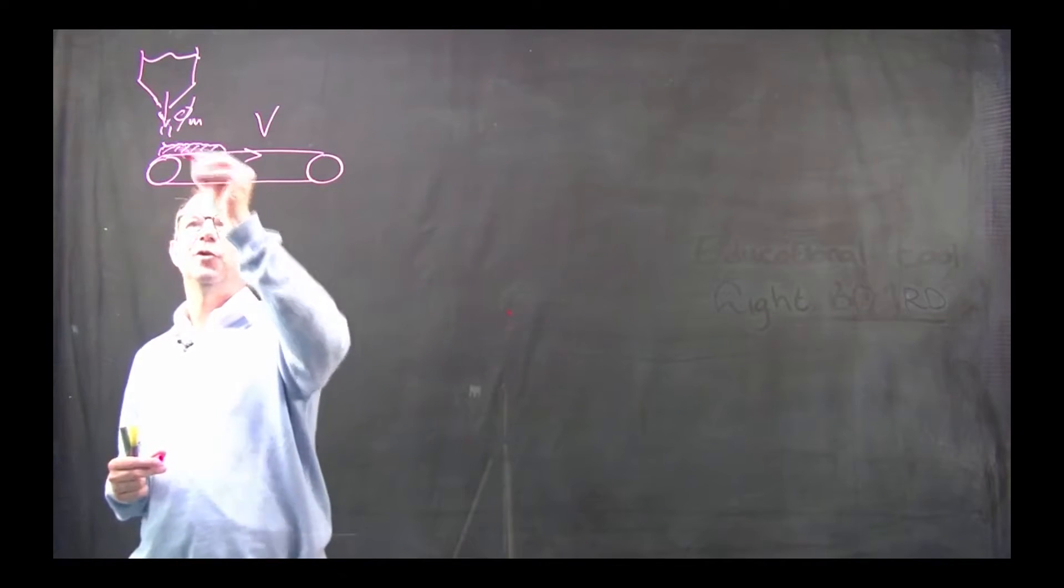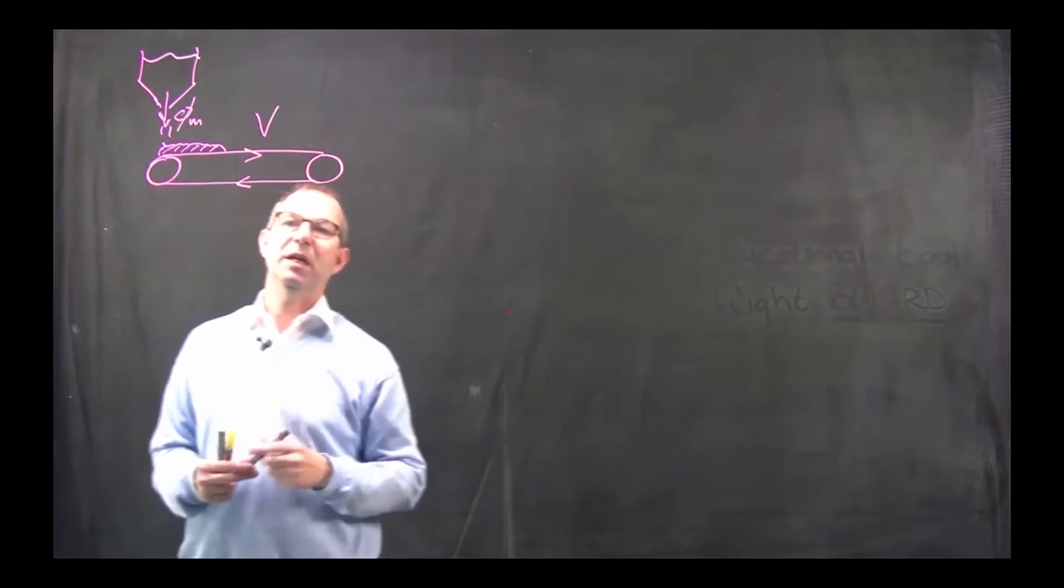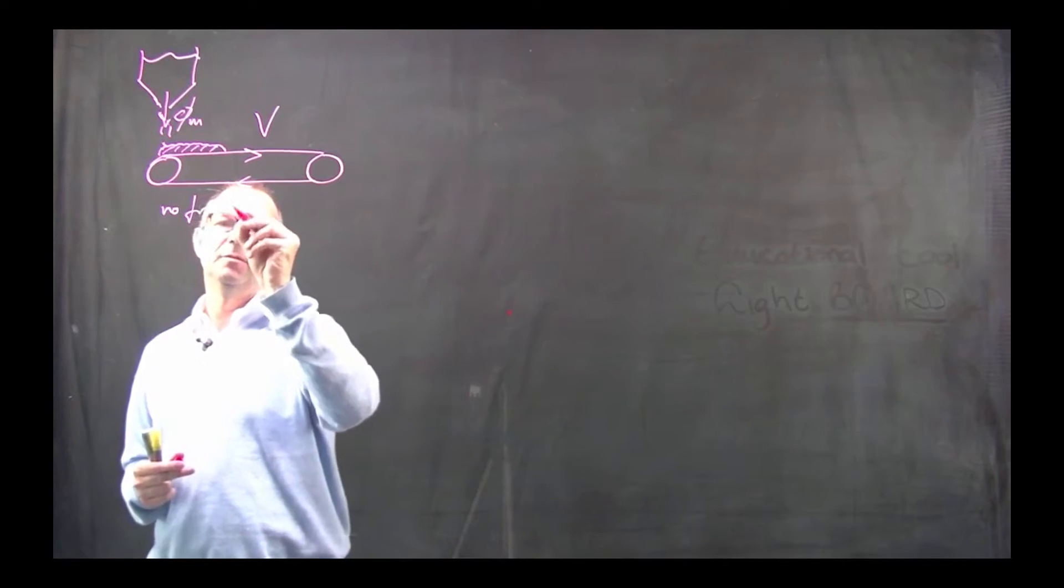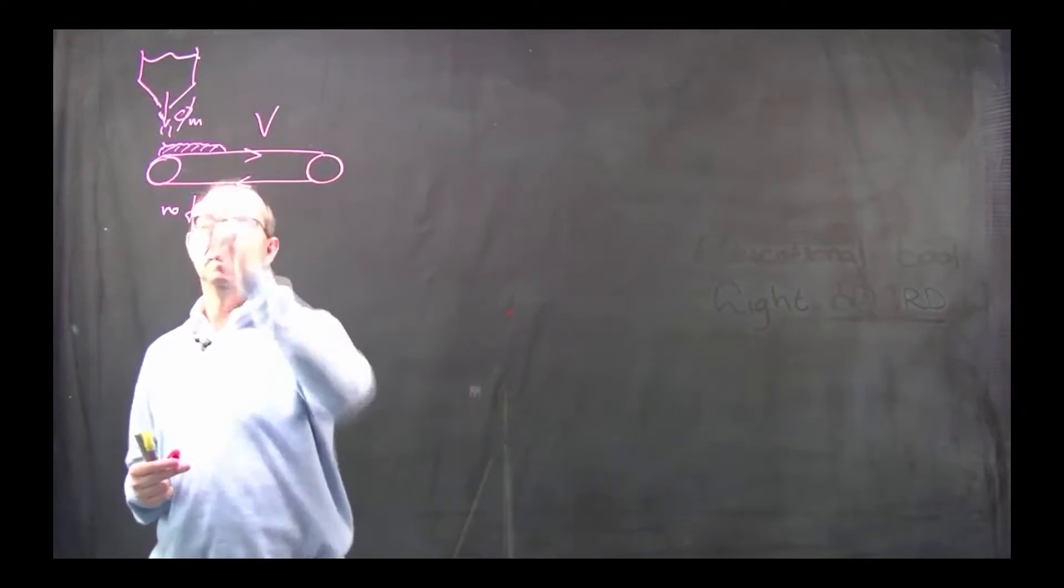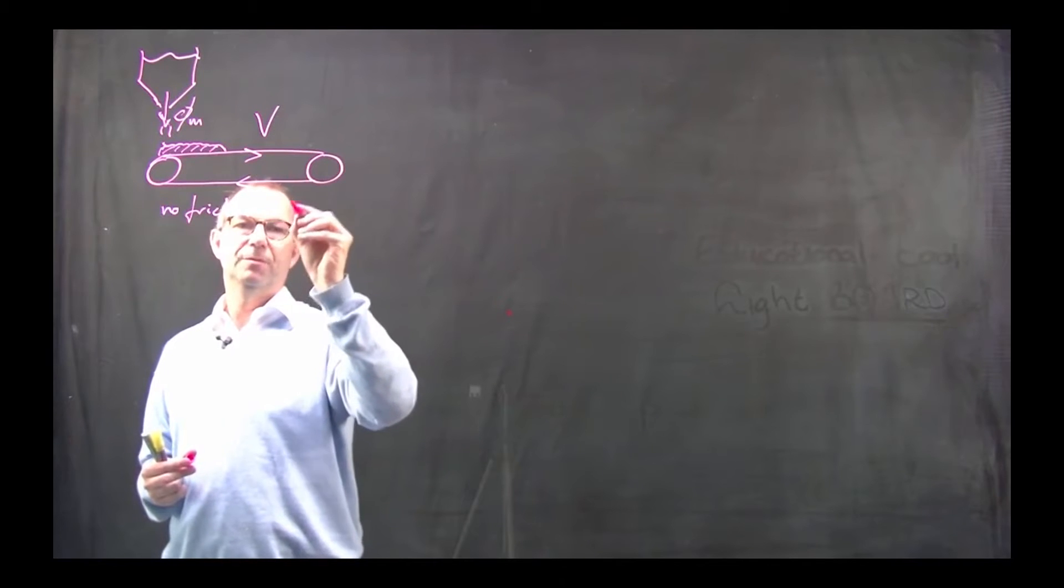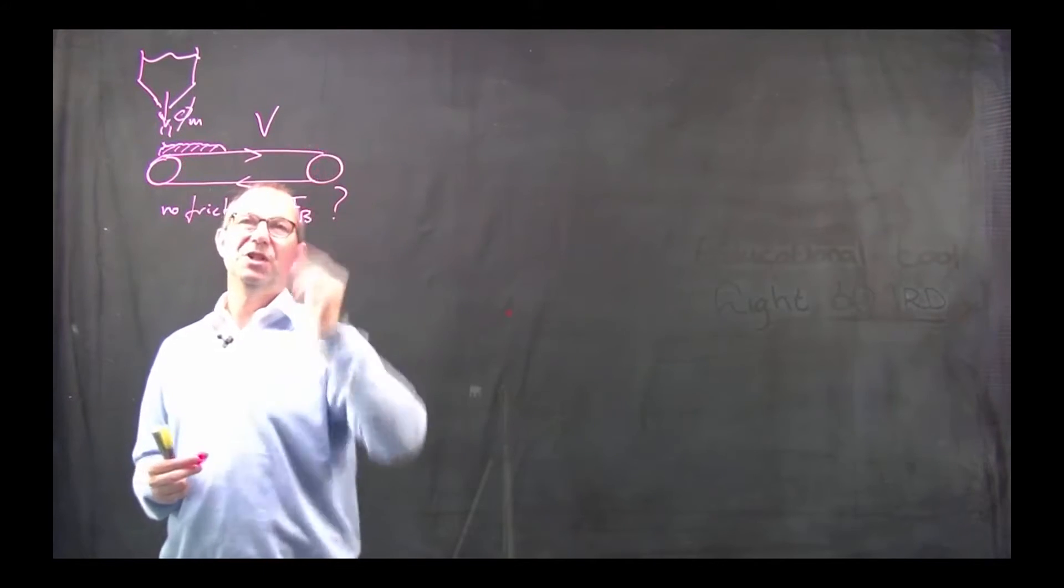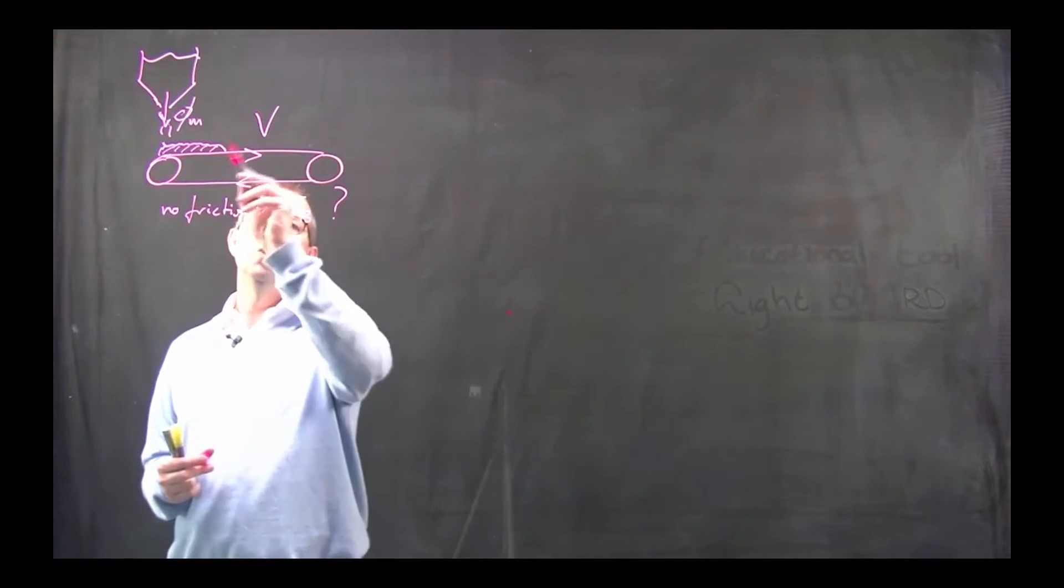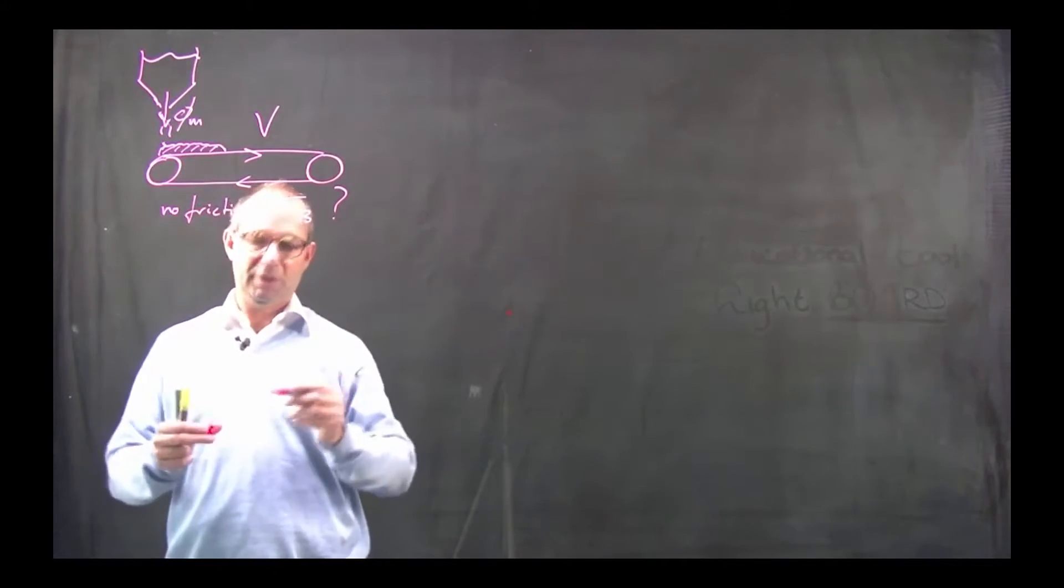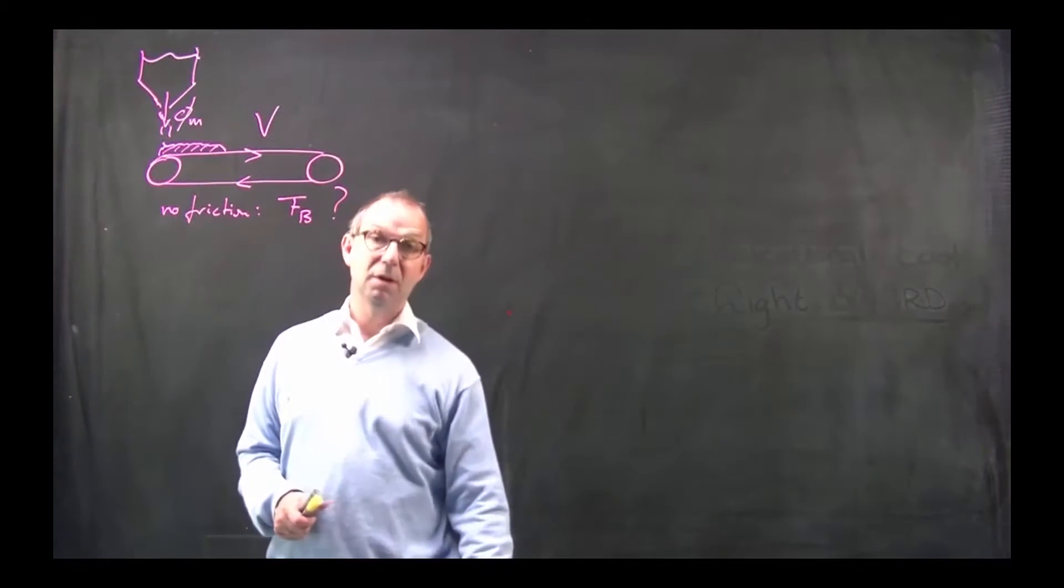This is the sand falling from here. And the question we would like to answer, suppose we can neglect friction. No friction on the belt, that is on the wheels that drive it. What is the force on the belt, what is the force needed to move it at a fixed velocity V, if the sand is constantly falling onto it. And we can find that with our momentum balance.